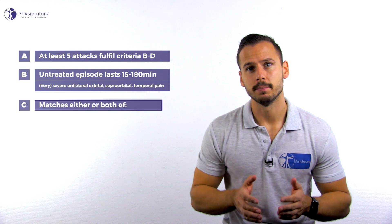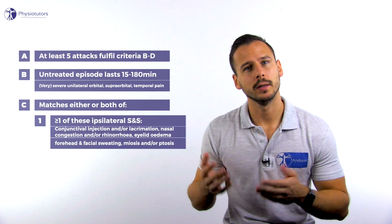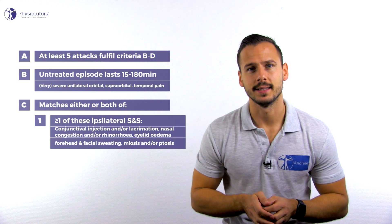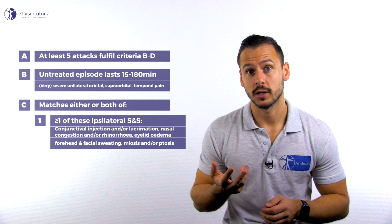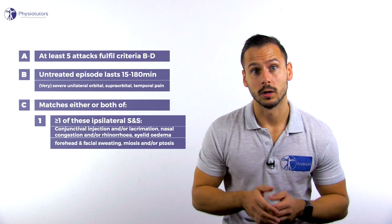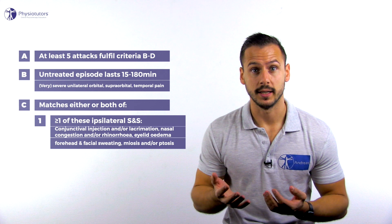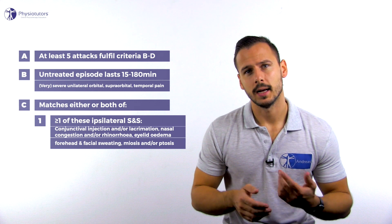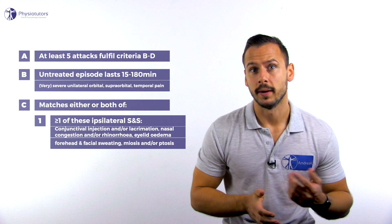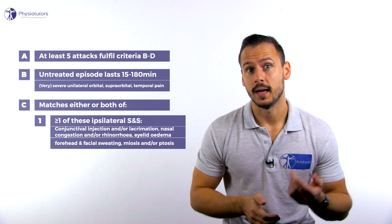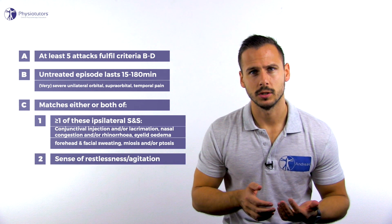It matches either or both of the following: at least one of the following signs and symptoms ipsilateral to the headache — conjunctival injection and/or lacrimation, nasal congestion and/or rhinorrhea, eyelid edema, forehead and facial sweating, miosis and/or ptosis, or a sense of restlessness or agitation.